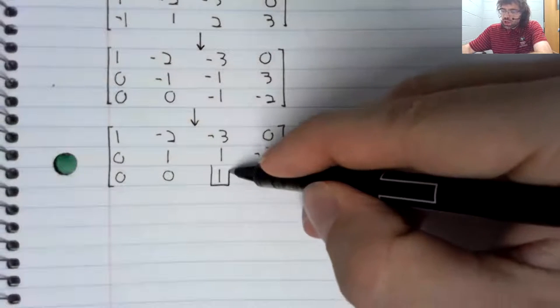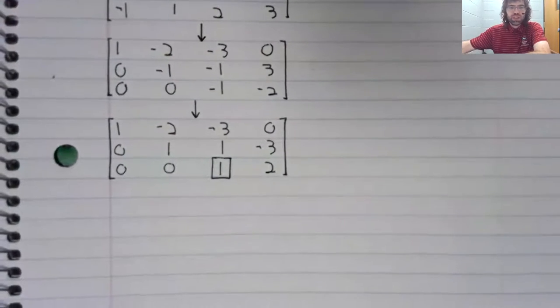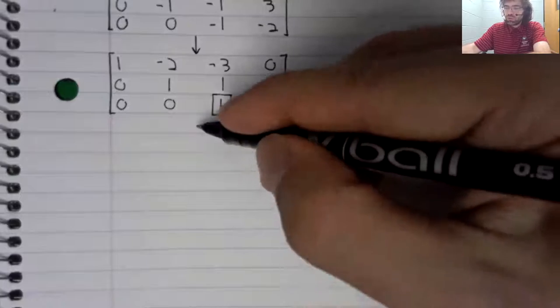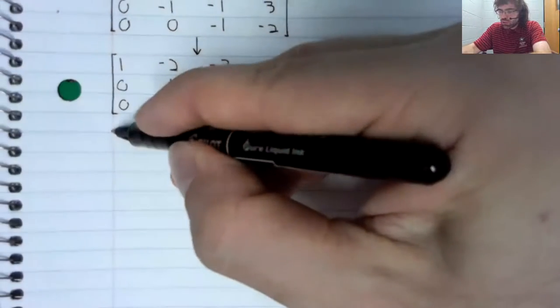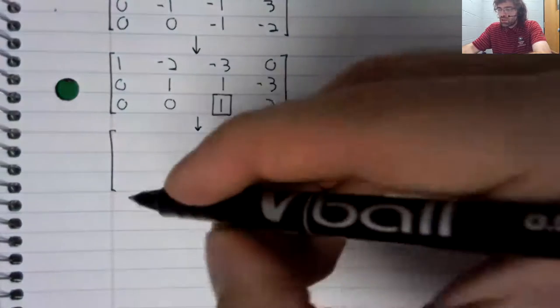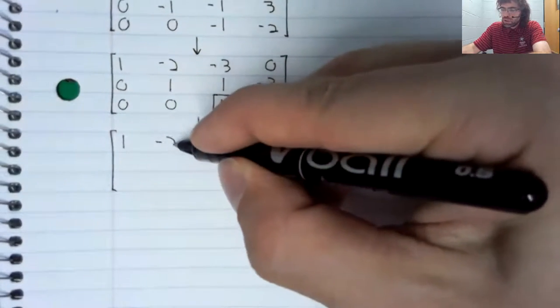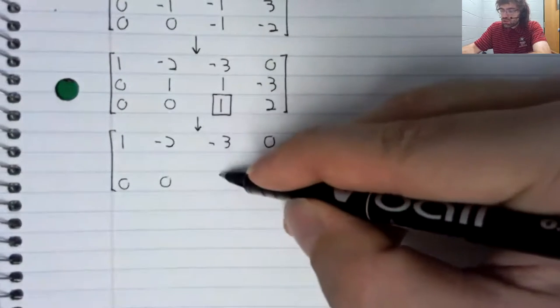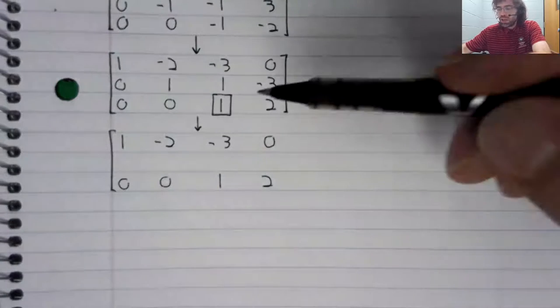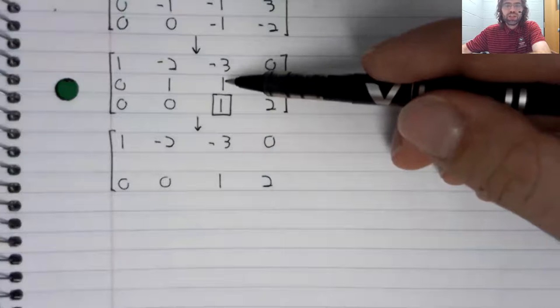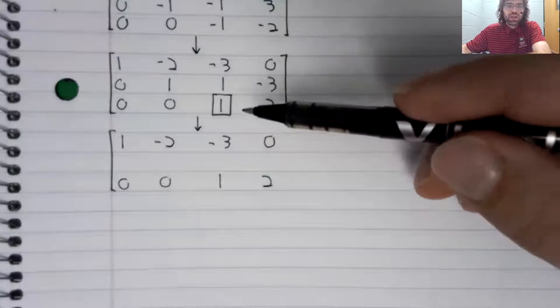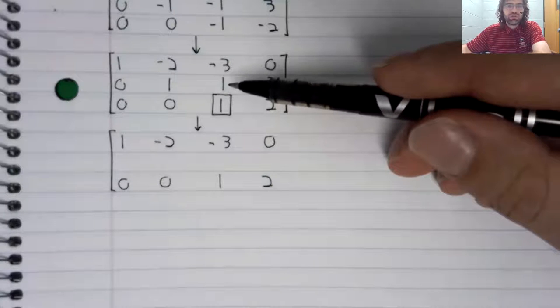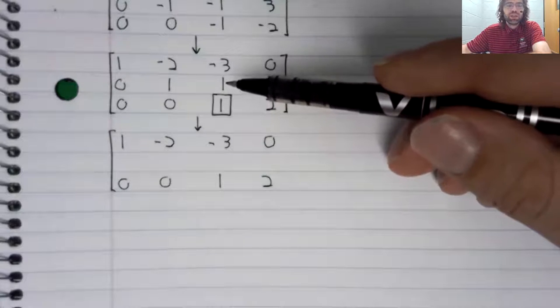And now we should start with the lower right leading entry and turn everything above it to zero. So these steps I'll show. The first row I'm going to leave alone for the moment. Then the third row I'm going to leave alone. How do we get rid of this one? We need a negative one. So if we multiply the third row by negative one and add it to the second row, that will turn this one to zero.